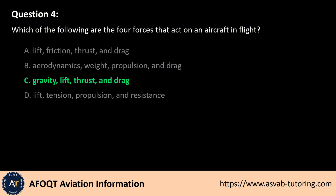The answer is C. These are the four fundamental forces acting on an aircraft in flight. Gravity pulls the aircraft downward, lift opposes gravity and keeps the aircraft airborne, thrust propels the aircraft forward, and drag opposes thrust, creating resistance. These forces must be balanced for stable and controlled flight.